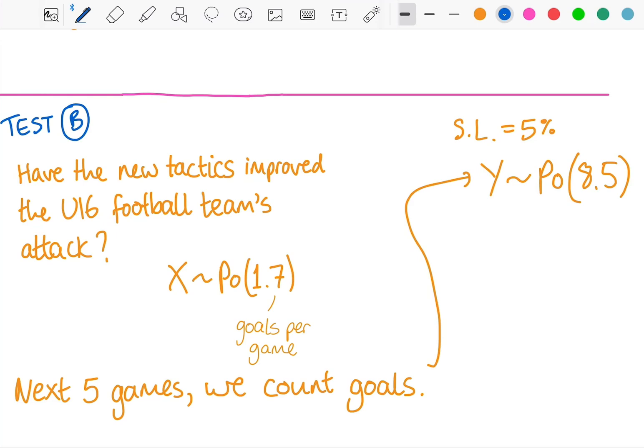Let's see what I mean by that. Let's say I've got a football team that scores goals at a Poisson-distributed rate of 1.7 goals per game. Then we apply new tactics to the team and we're trying to test whether their attack has improved, whether they are scoring more goals now. We measure them over the course of 5 games. We count the goals they score.